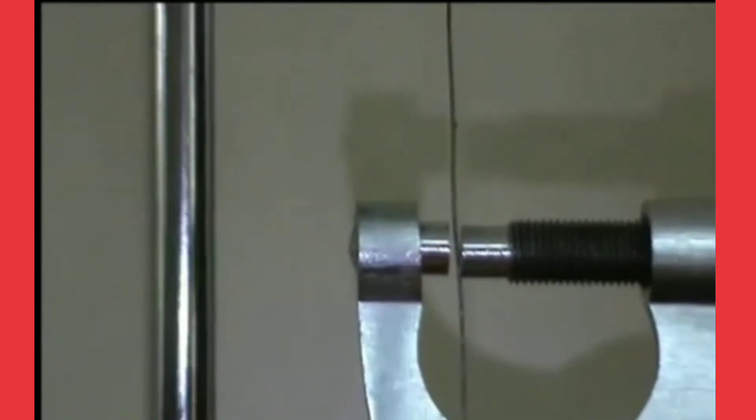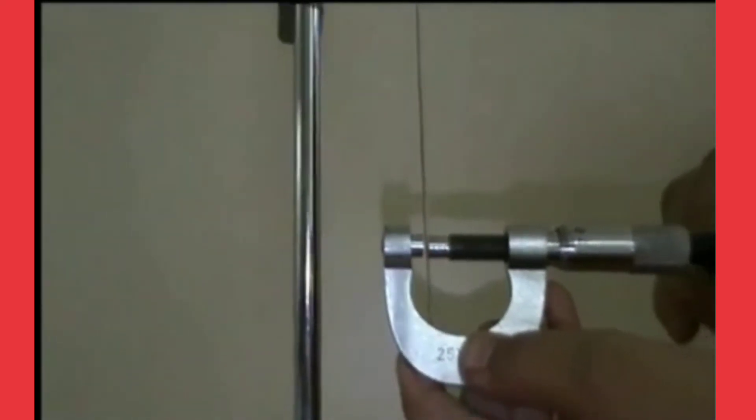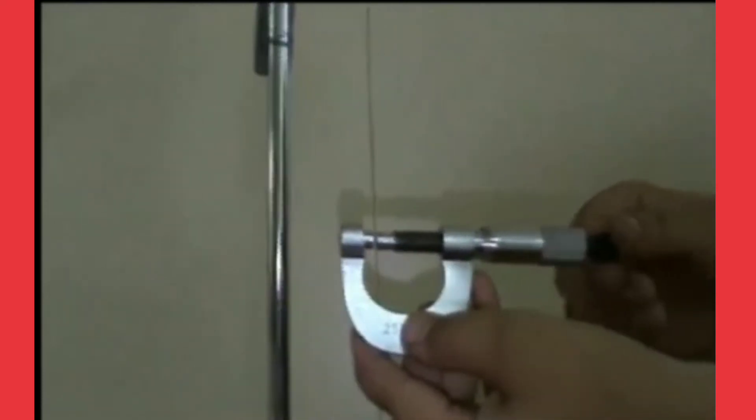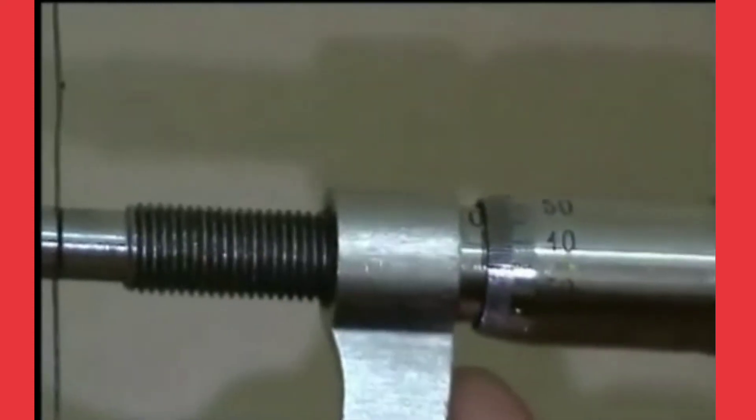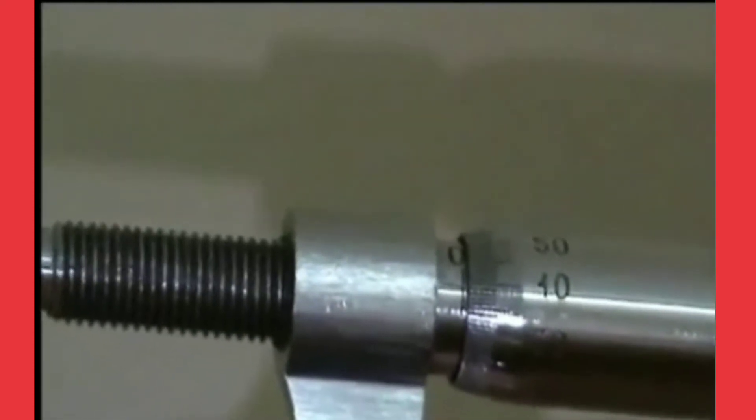Adjust the screw gauge up to the wire between studs in contact, then take the pitch scale reading (PSR) and head scale coincidence (HSC) and tabulate them in our tabular form.